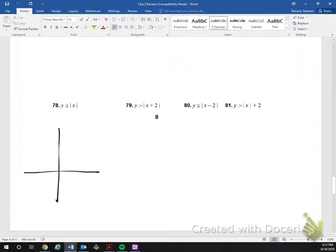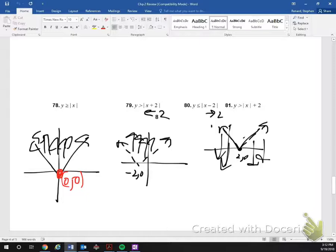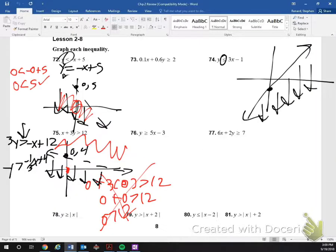Moving on. So now we have y is greater than or equal to the absolute value of x. So we know that that's the general graph for the absolute value of x, where that right there is actually 0, 0. It's that v. And we are shading up because it is greater than or equal to.